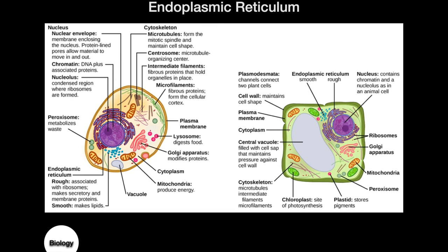That brings us to the next organelle: the endoplasmic reticulum, which comes in two types — rough endoplasmic reticulum and smooth endoplasmic reticulum. The rough endoplasmic reticulum is associated with ribosomes and is important in making secretory molecules and membrane proteins. The smooth endoplasmic reticulum is responsible for creating lipids like phospholipids for your cell membranes.